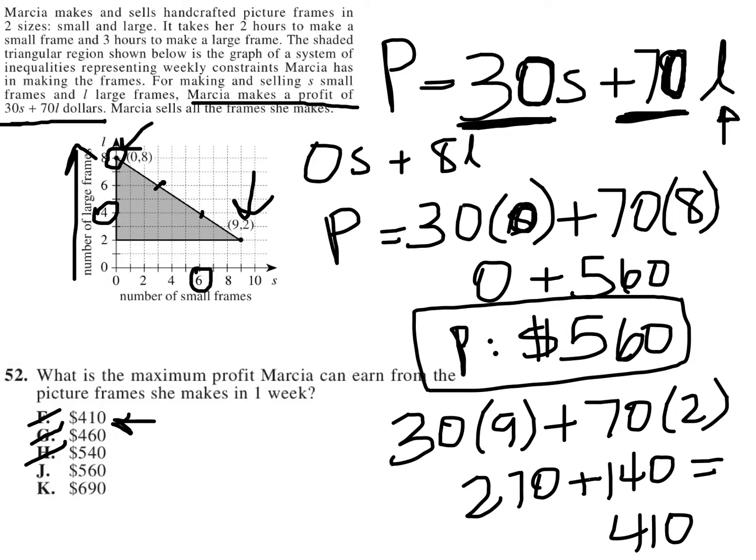where you have 3 small and 6 large. Those are the only two combinations based upon the graph, because this is a linear graph. And we only have exact numbers of small and large frames at the points that I've just provided.